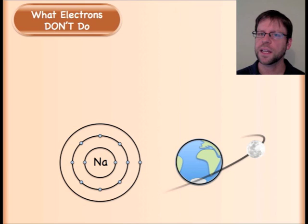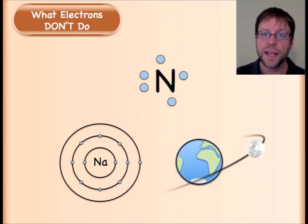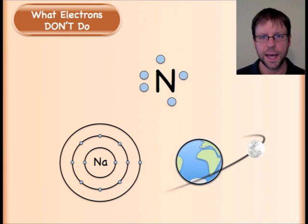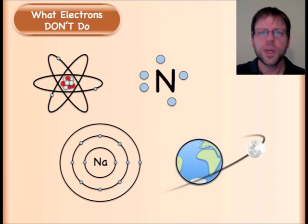Likewise I could go look at a Lewis dot structure. So I'm showing in this case some valence electrons that are around this nitrogen atom, but again this is not even attempting to demonstrate what electrons are actually doing around the atom.